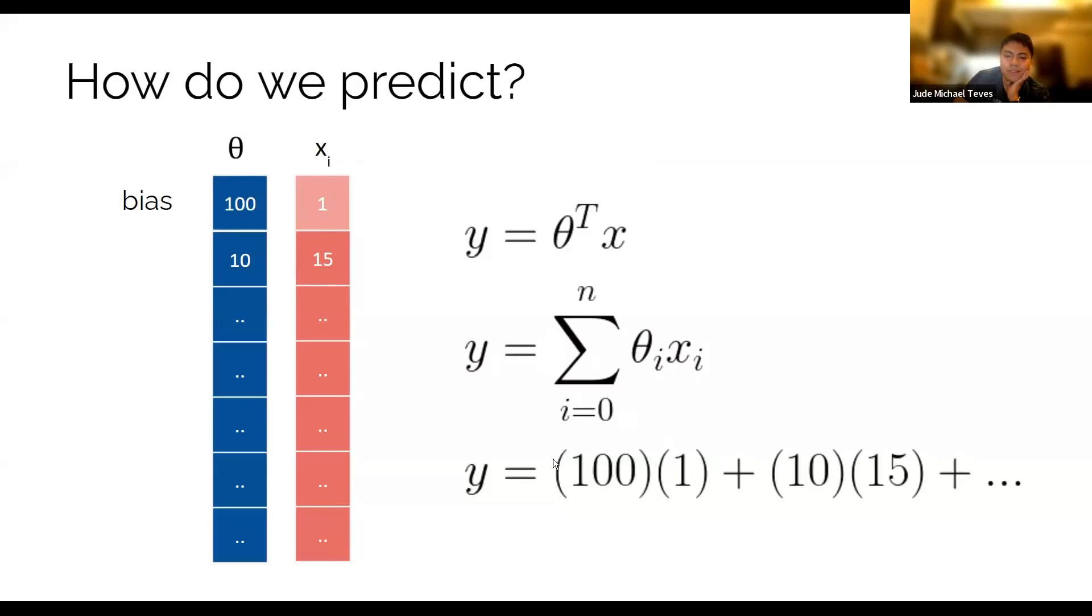So you just do multiplication. It's that simple. Element-wise multiplication, and then you get the sum. So that's what happens if you get the transpose of a vector and then multiply it to another vector. You're basically doing this, the sum of the products of the elements.